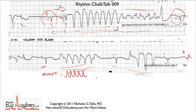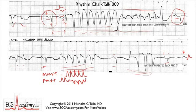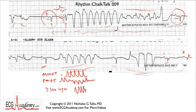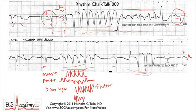Monomorphic ventricular tachycardia is where all the beats look the same in the same lead — same morphology. Polymorphic ventricular tachycardia is where the beats seem to change over time with at least two different morphologies during the run. These are generally at rates below 300 beats per minute. Above 300 bpm, monomorphic VT is called ventricular flutter — think of atrial flutter at around 300. Polymorphic VT above 300 beats per minute is ventricular fibrillation.